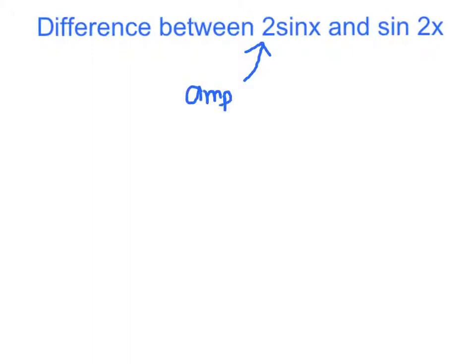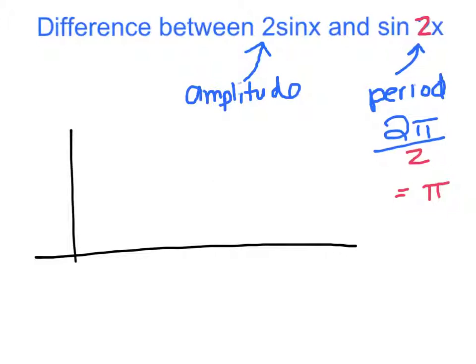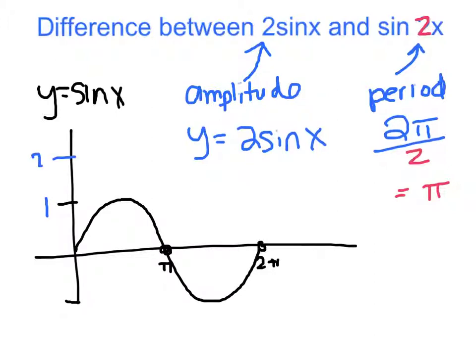The next example covers the difference between 2 sine x, where the 2 is the amplitude, and sine 2x, where the 2 affects the period — but the period is not 2. The period is 2 pi divided by 2, so the period is pi. Looking at 2 sine x: the base sine graph goes up 1 and down 1. Changing the amplitude to y equals 2 sine x makes the graph twice as tall, going up to 2 and down to negative 2.